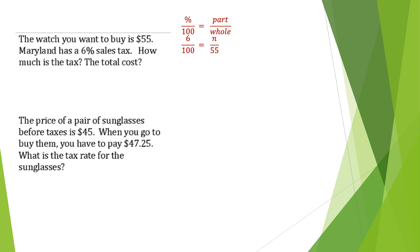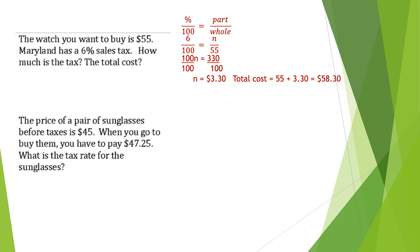Setting up the proportion: 6 goes in the percent place and 55 is the whole. Cross multiplying gives 100n equals 330. Dividing by 100 gives n equals three dollars and thirty cents — that's the tax. The second step is finding the total cost: the original 55 plus the tax of 3.30. Tax never decreases the price, you always add it on, so 55 plus 3.30 equals 58.30.